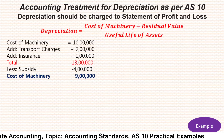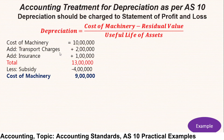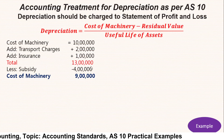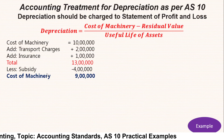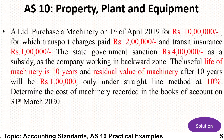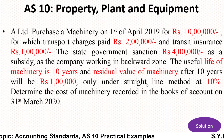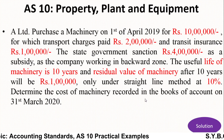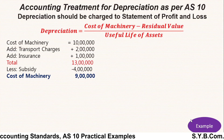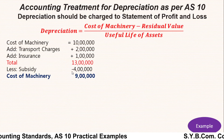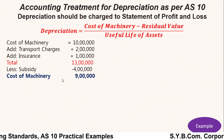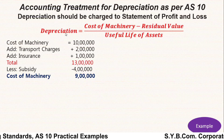The cost of machinery is rupees 10 lakh, plus transport charges of rupees 2 lakh, plus insurance of rupees 1 lakh, giving a total of rupees 13 lakh. Less the subsidy of rupees 4 lakh received from the government for operating in the backward zone, which must be deducted from the cost of assets. So the cost of machinery = 13 lakh − 4 lakh = rupees 9 lakh.